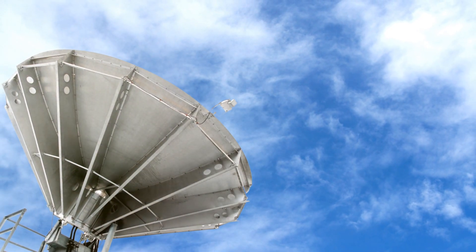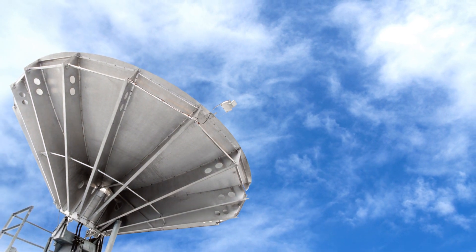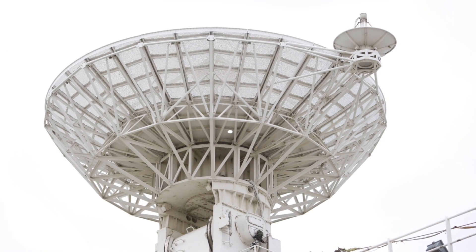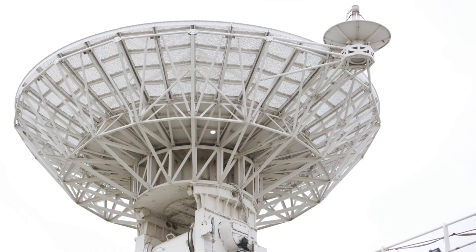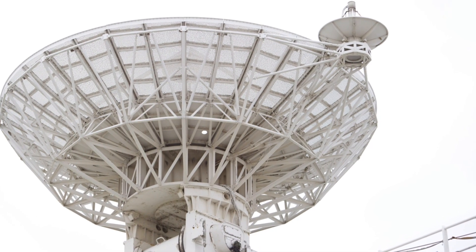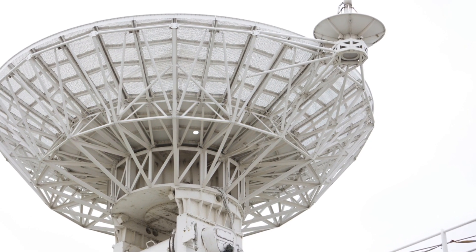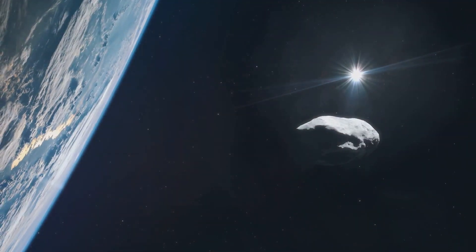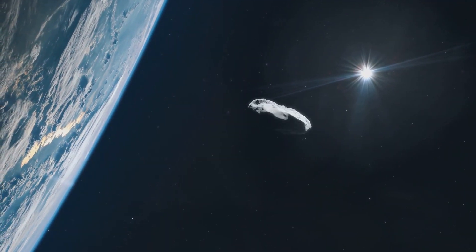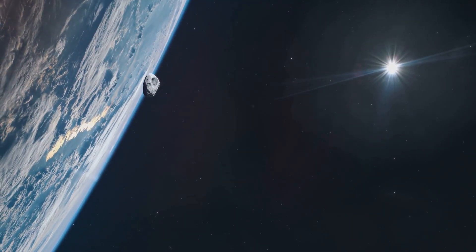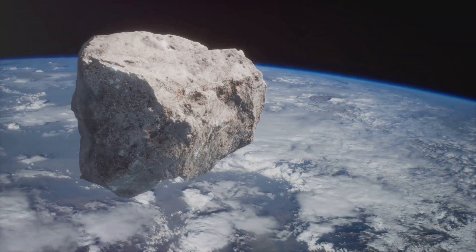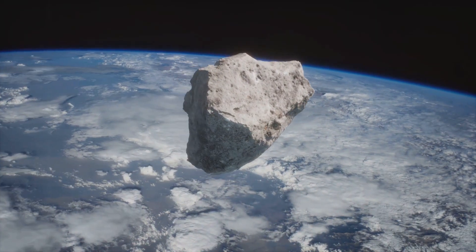Next up, we've got telescopes. Not the kind you might have in your backyard, but massive high-powered ones, often located in remote areas to escape the light pollution of cities. These telescopes capture the faint light reflected off the asteroid, helping us determine its position and velocity. But it's not just about the hardware, it's also about math. Astronomers use complex calculations, based on Newton's laws of motion and gravity, to predict the asteroid's future trajectory.